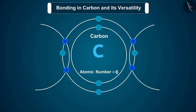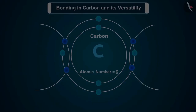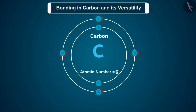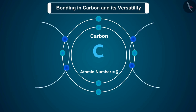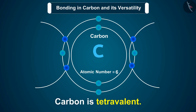Carbon overcomes this problem by sharing its valence electrons with other atoms of carbon or with atoms of other elements. Carbon has 4 electrons in its outermost shell, so it requires 4 more electrons to achieve the noble gas configuration, which it gets by sharing electrons. Since one carbon atom requires 4 electrons, it has a valency of 4 — that is, carbon is tetravalent.